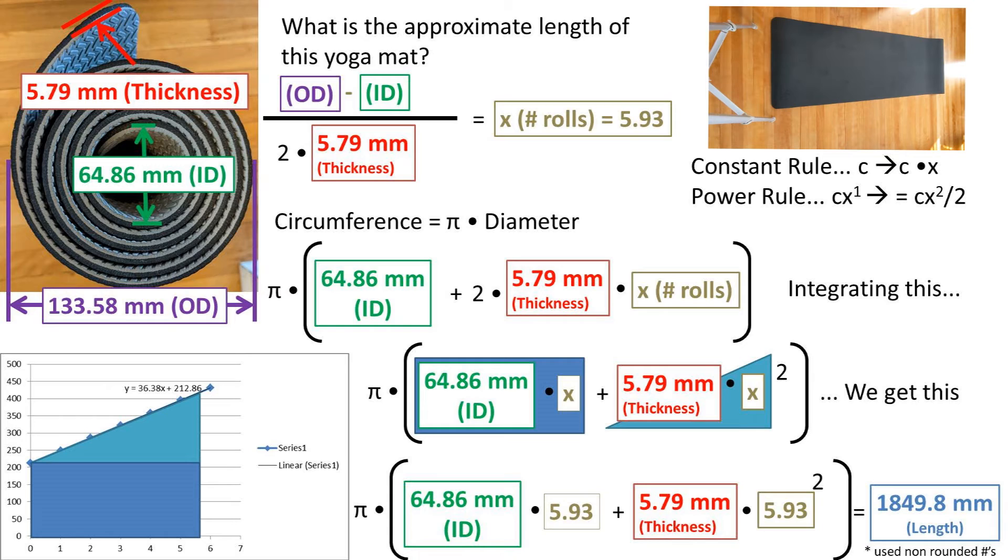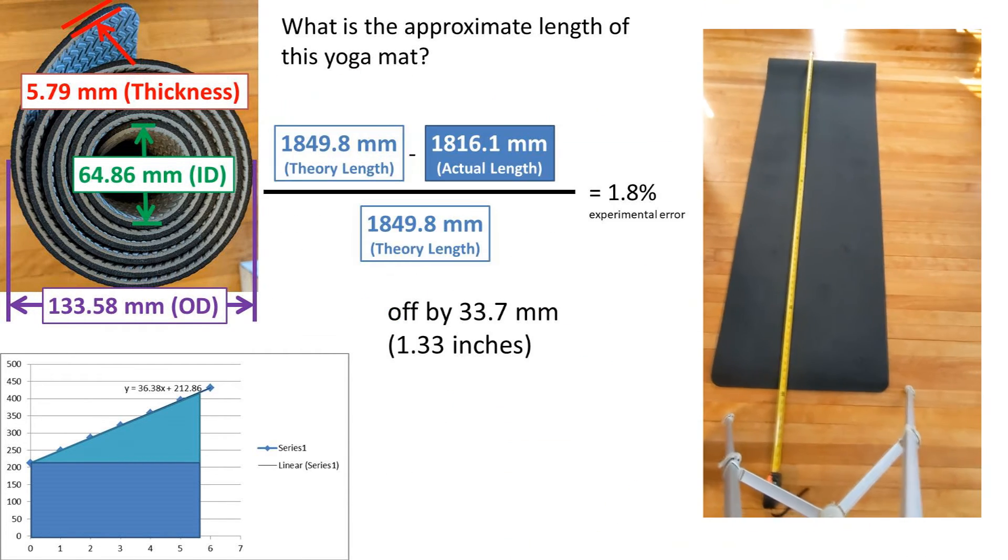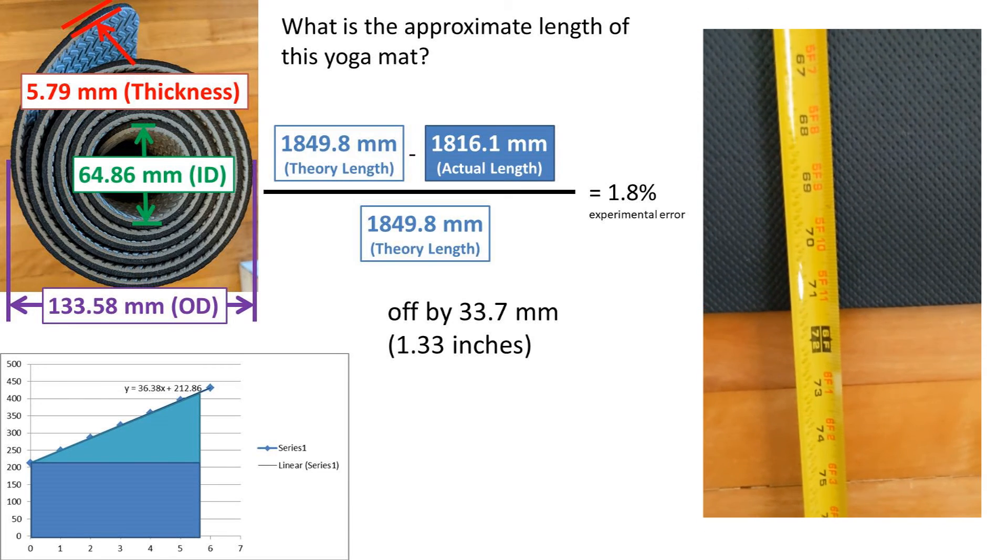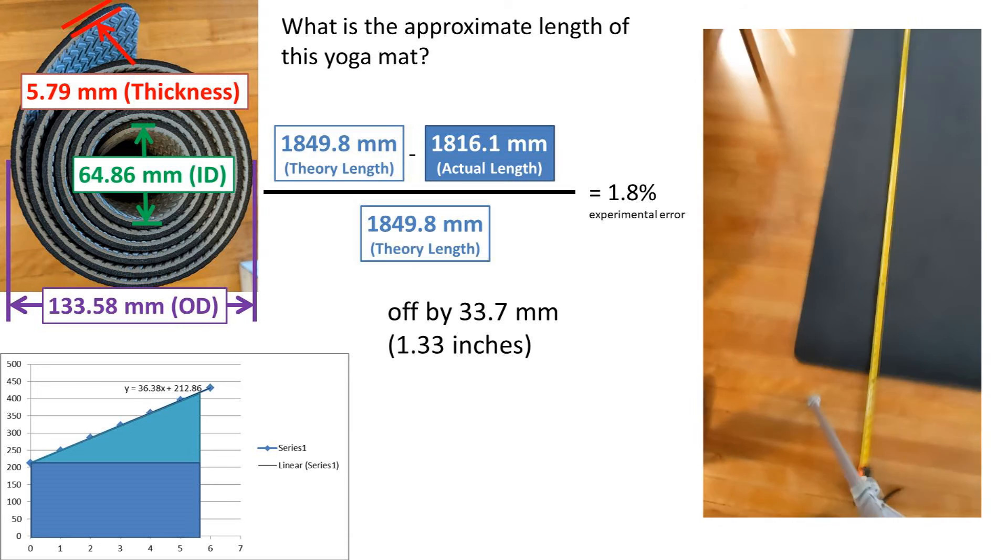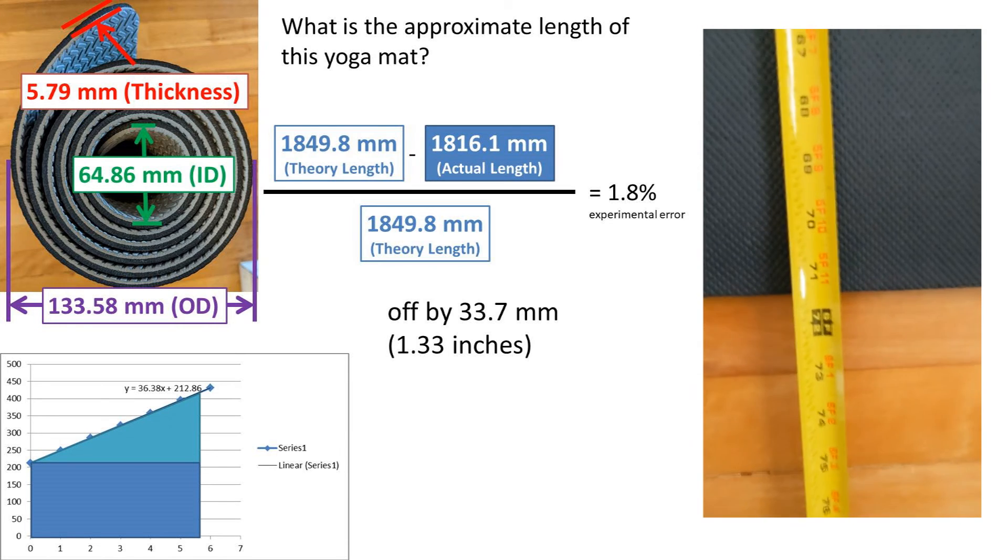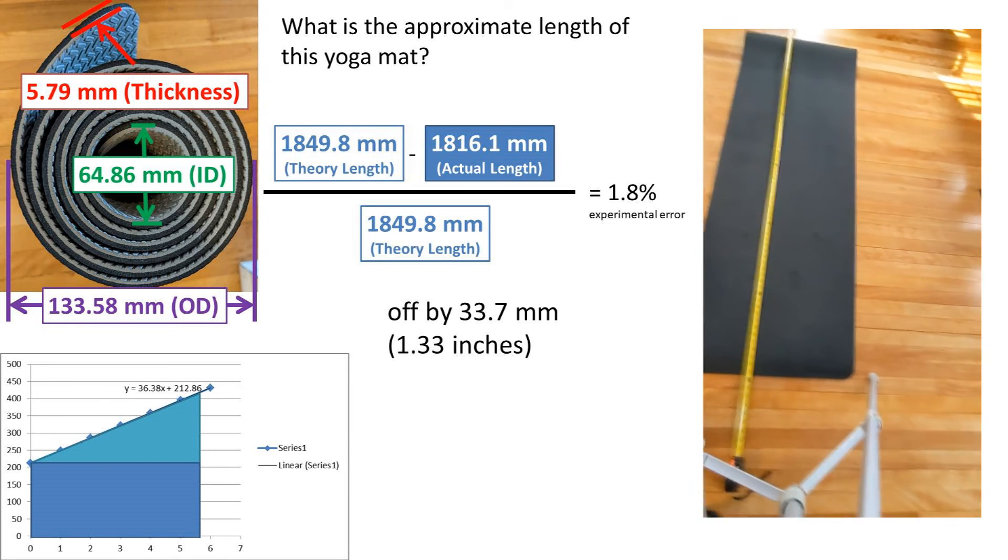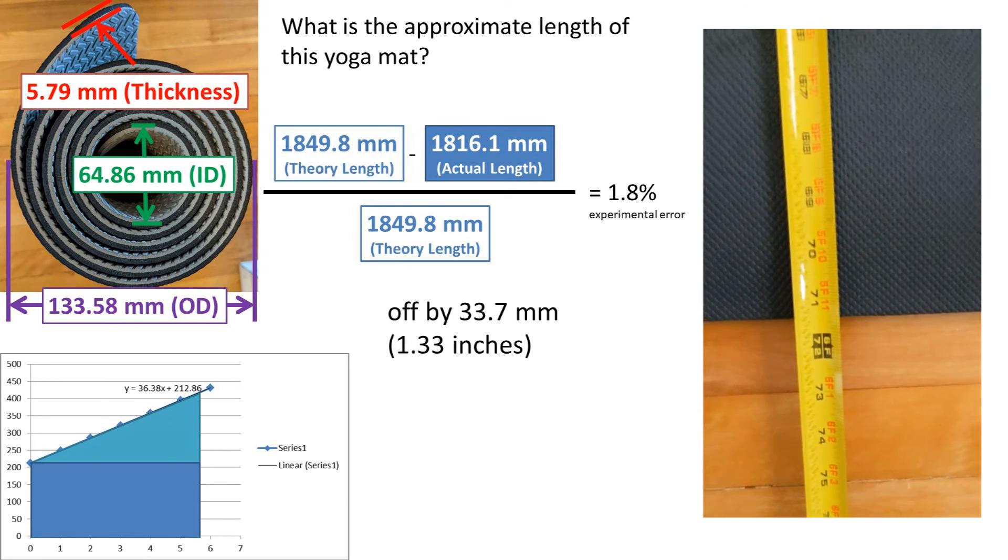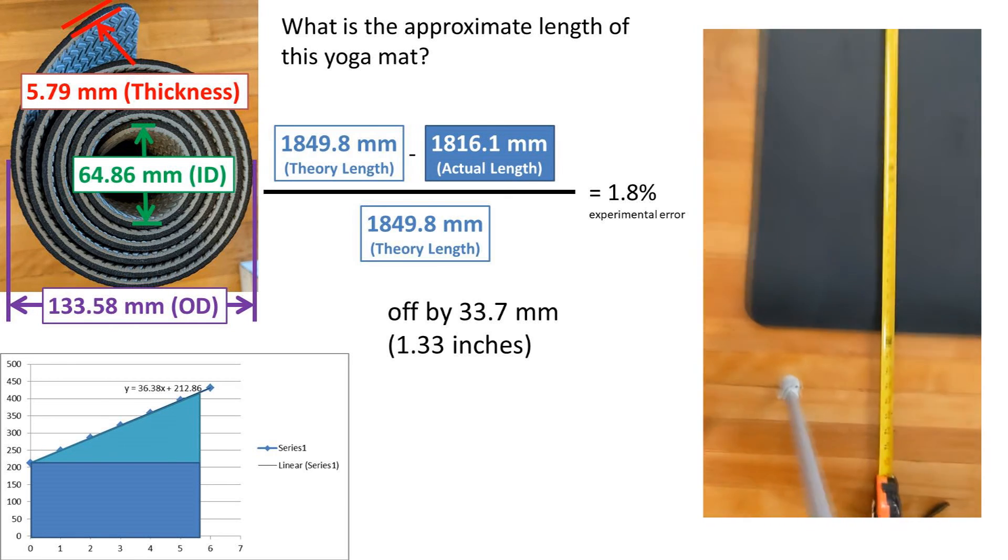Now we can plug in the number of rolls we estimated at the beginning, and we get 1849.9 millimeters of length. Let's see how this compares to the actual value. I measured a length of 71.5 inches, which converts to 1816.1 millimeters. This gives us an experimental error of 1.8 percent, which means we are off by 33.7 millimeters, or 1.33 inches.